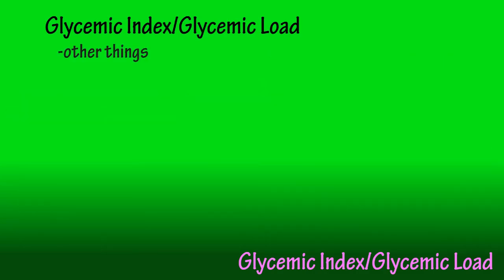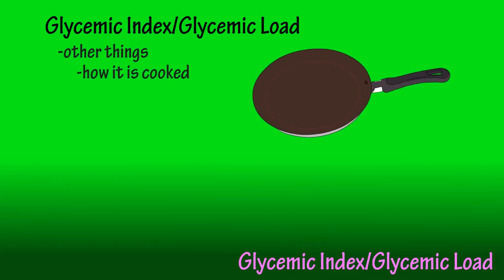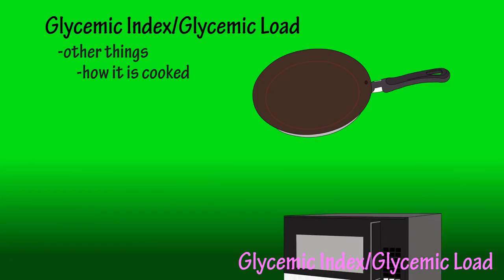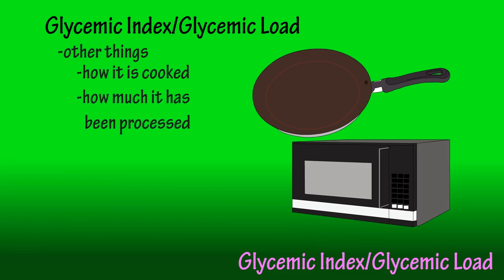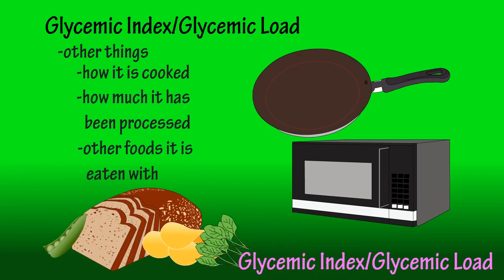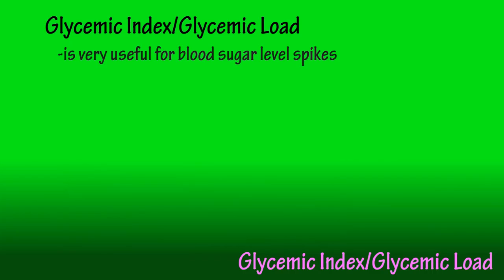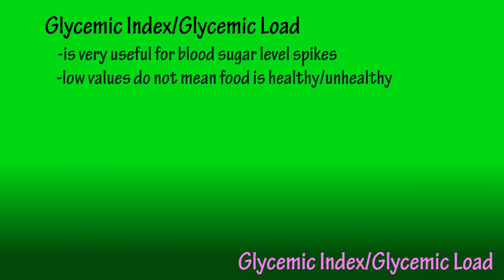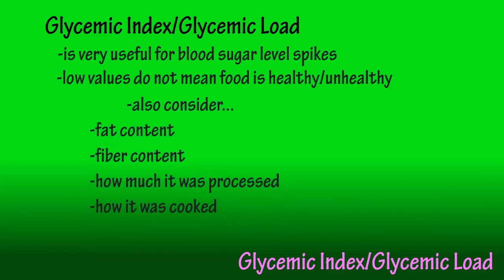Other things that affect a food's glycemic index value include how it's cooked. Any cooking will raise a food's value; however, slow cooking will not raise a glycemic index value nearly as much as fast cooking, such as microwaving. The more a food has been processed, the higher the glycemic index value will be, and what other types of foods it is being consumed with will also affect its value. Because a food has a low glycemic index or glycemic load value does not mean the food is healthy or unhealthy — it's only one tool. Look at the fat content, the fiber content, how much processing the food has gone through, and how the food was cooked.